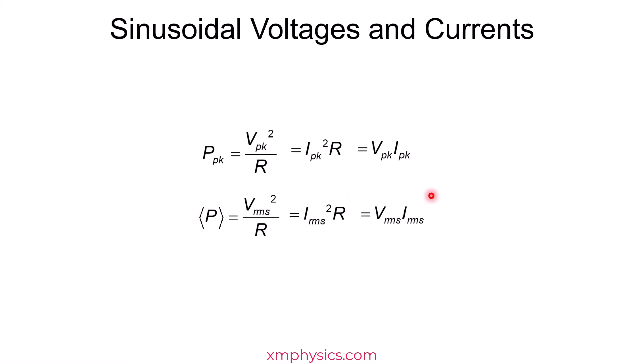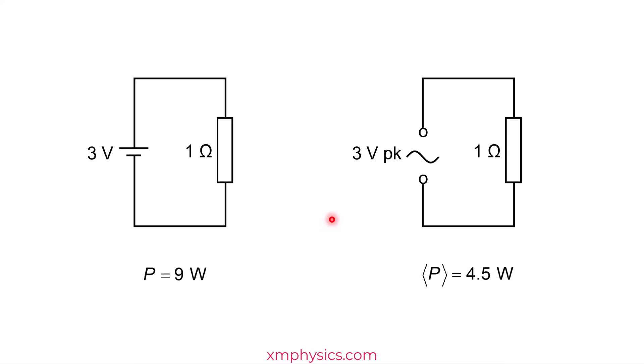So can you see how useful the root mean square values are? And that's why when specifying AC voltages, we will rather use their root mean square values rather than the peak values.